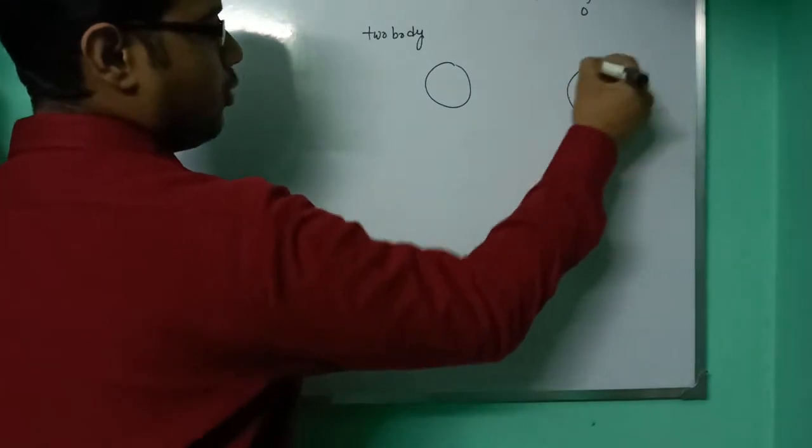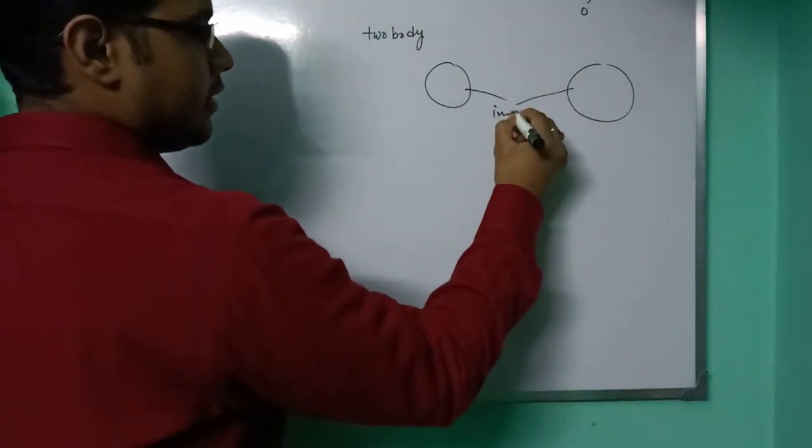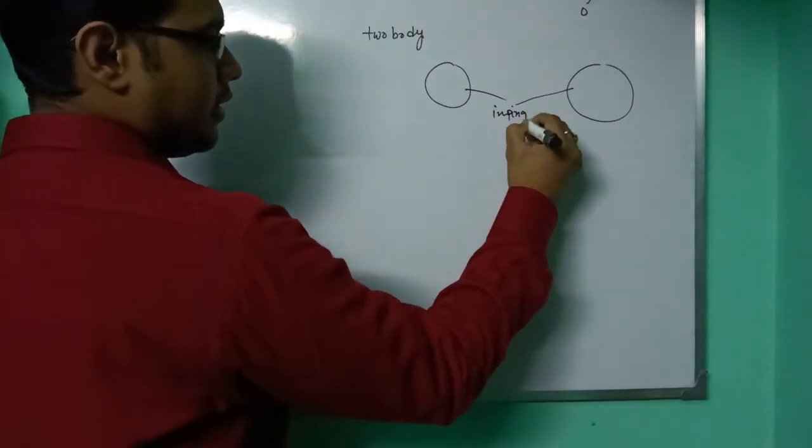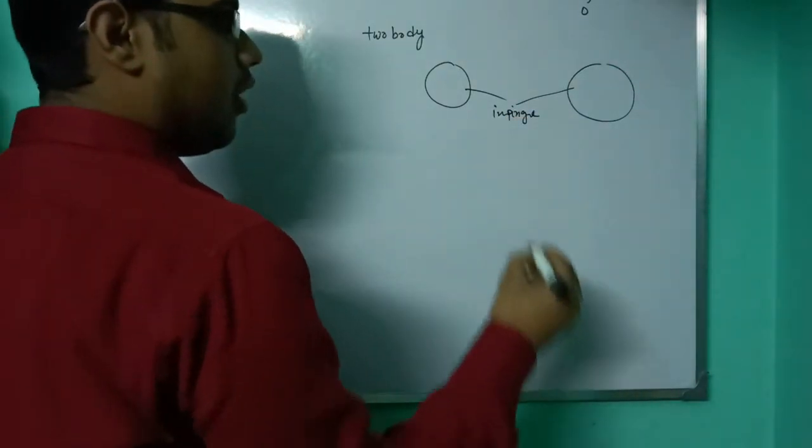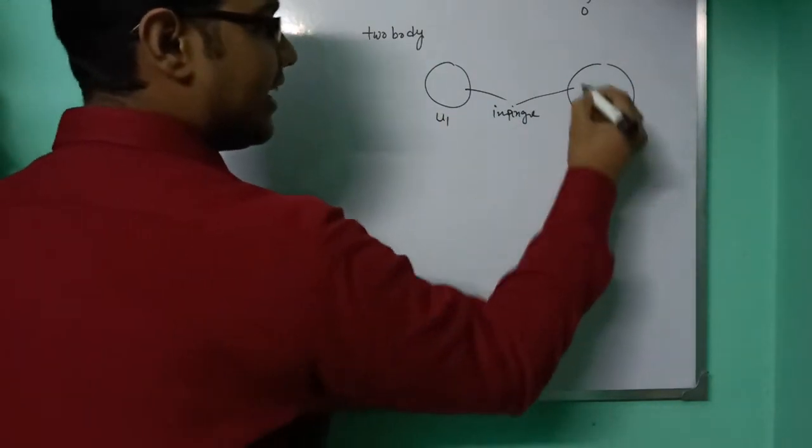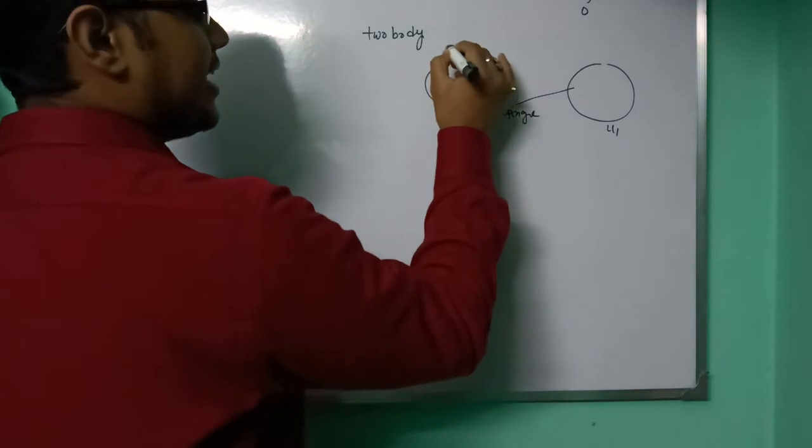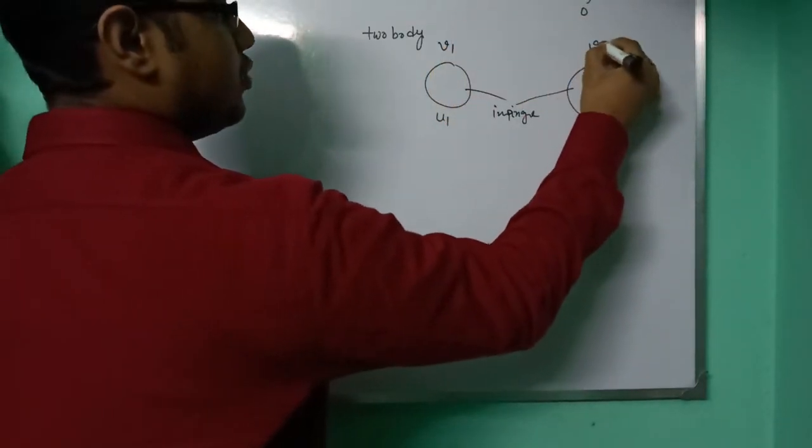Two bodies are impinged together or collide together. Their initial velocities are u1 and u2, and the final velocities are v1 and v2.